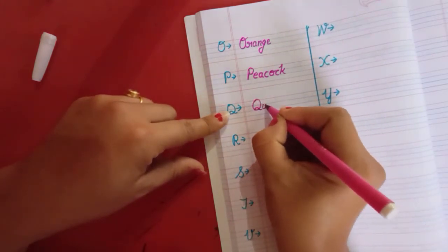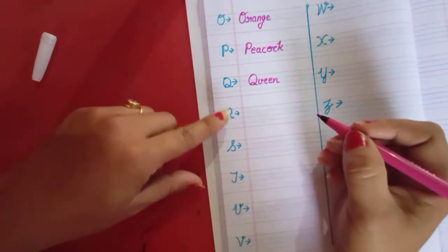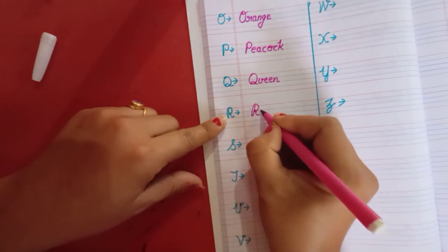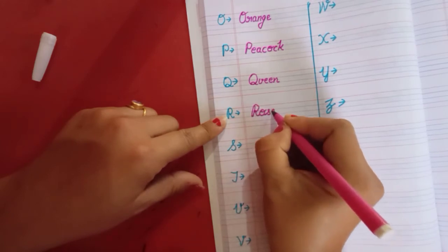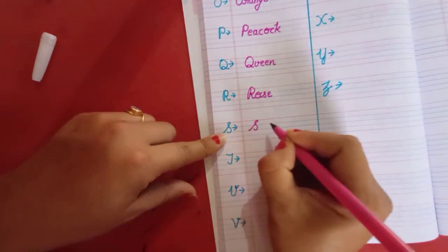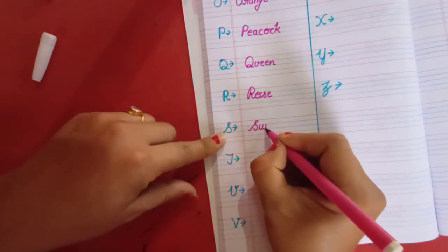R for rabbit or R for rose. R O S E rose. S for sun. S for swan. S for ship. S U N sun. S for sun.